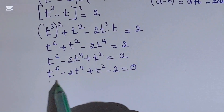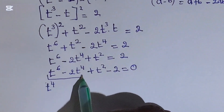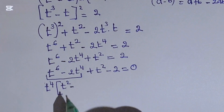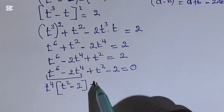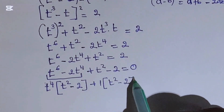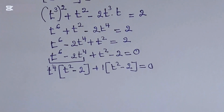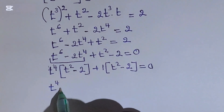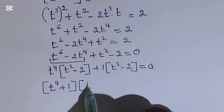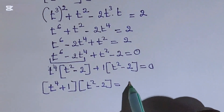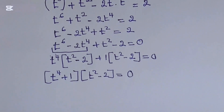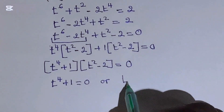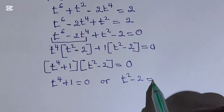Now here we can factorize: take t to the power of 4 for this part to get (t² - 2), plus factorize (t² - 2), which is equal to 0. So we can take what is outside the bracket together to get (t⁴ + 1). So we can factorize (t² - 2), which is equal to 0. That gives us (t⁴ + 1) = 0 or (t² - 2) = 0.